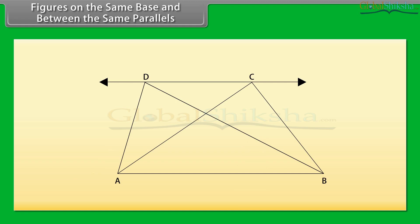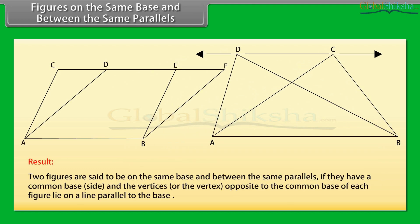Similarly, in this figure, the triangles ADB and ACB both lie on the same base AB and between the same parallels AB and DC. So, we can say that two figures are said to be on the same base and between the same parallels if they have a common base side and the vertices or the vertex opposite to the common base of each figure lie on a line parallel to the base.